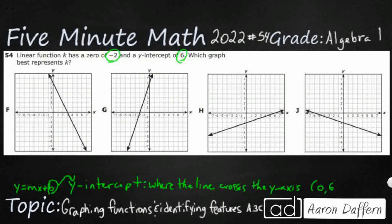So these are going to be the actual coordinates, but most of the time we'll just kind of shorten that down and say our y-intercept is just going to be 6 because we know the x value is 0. So let's take a look. I've got a y-intercept right here of 6. So f looks good.